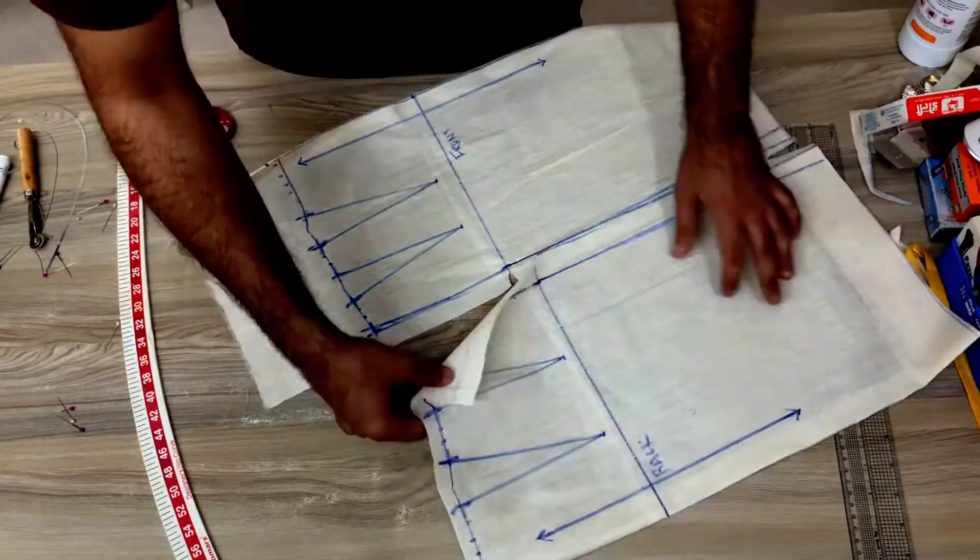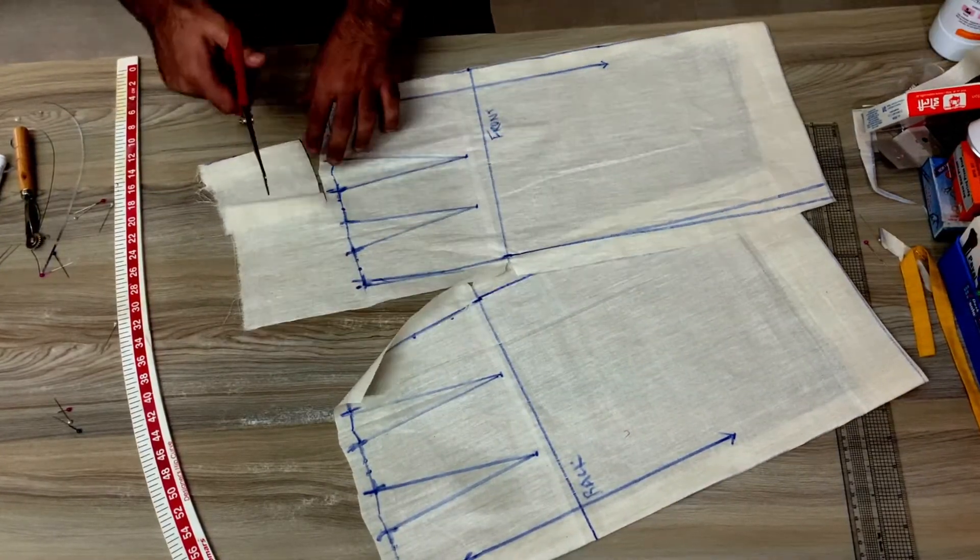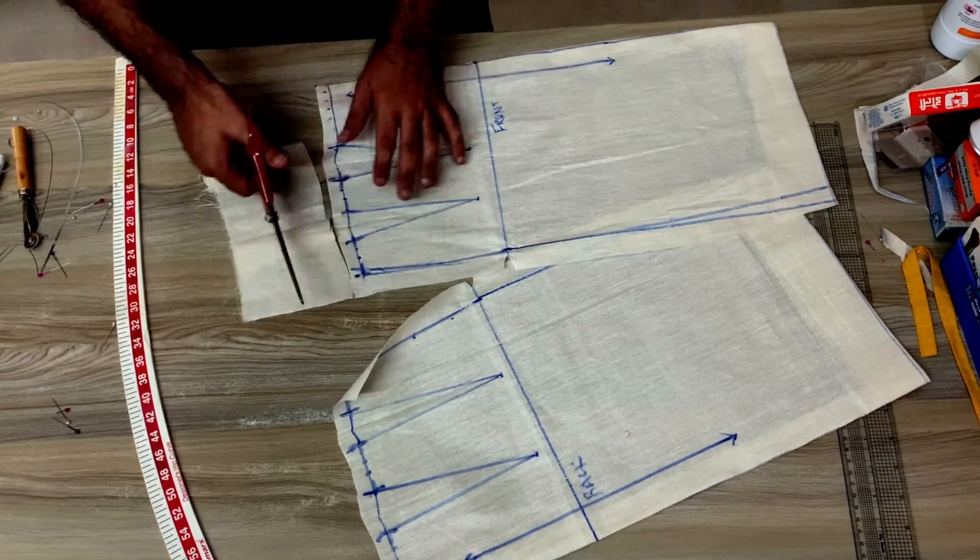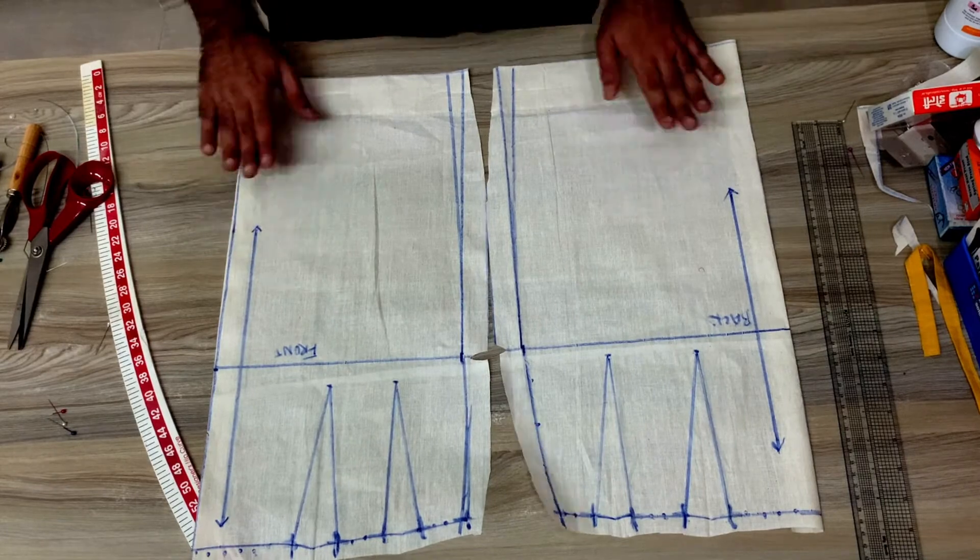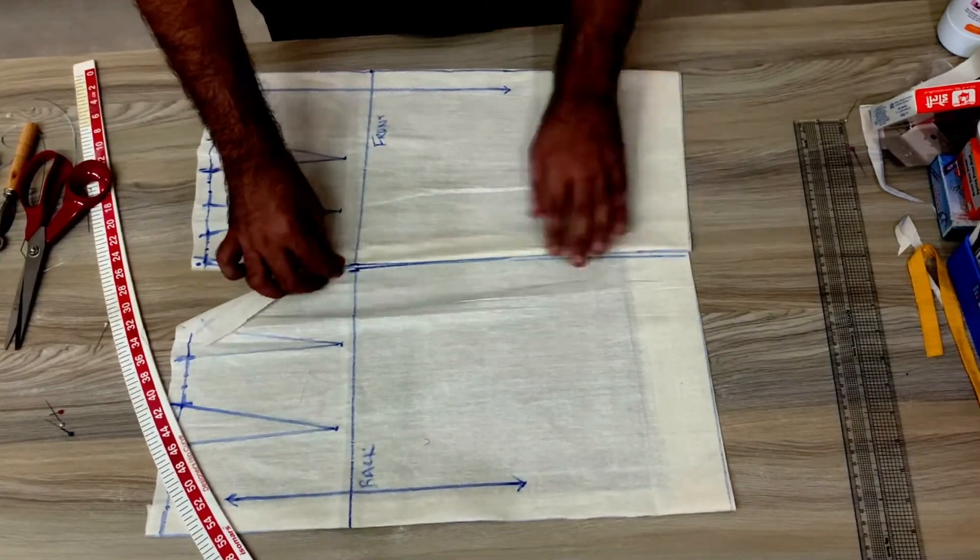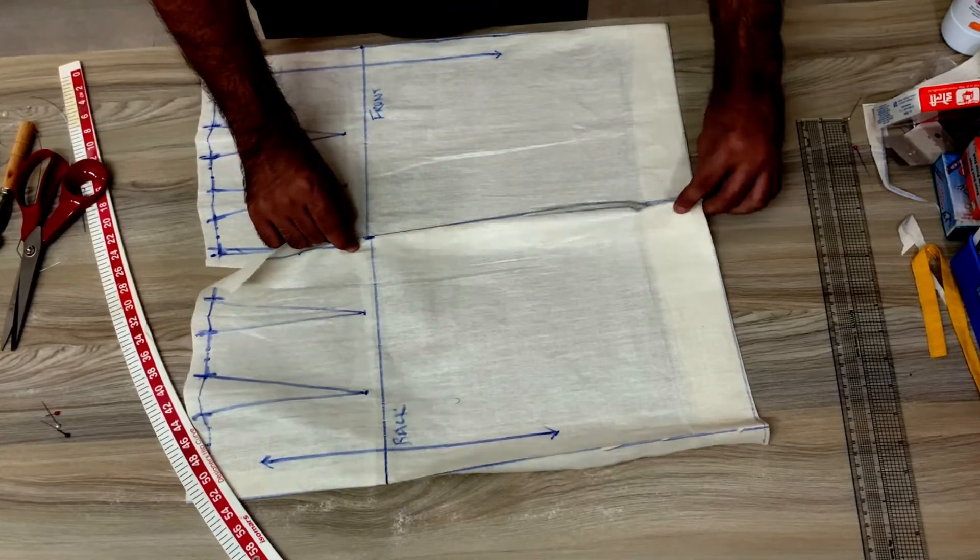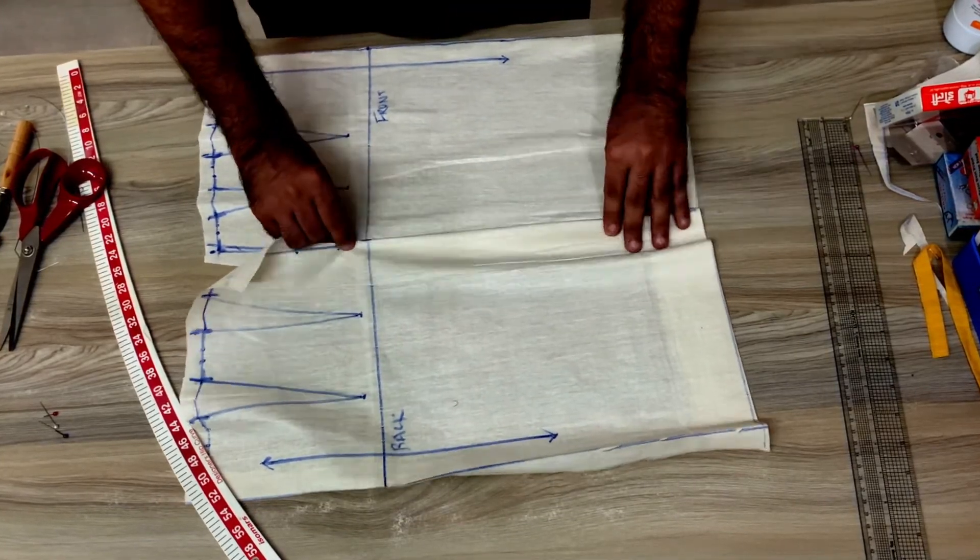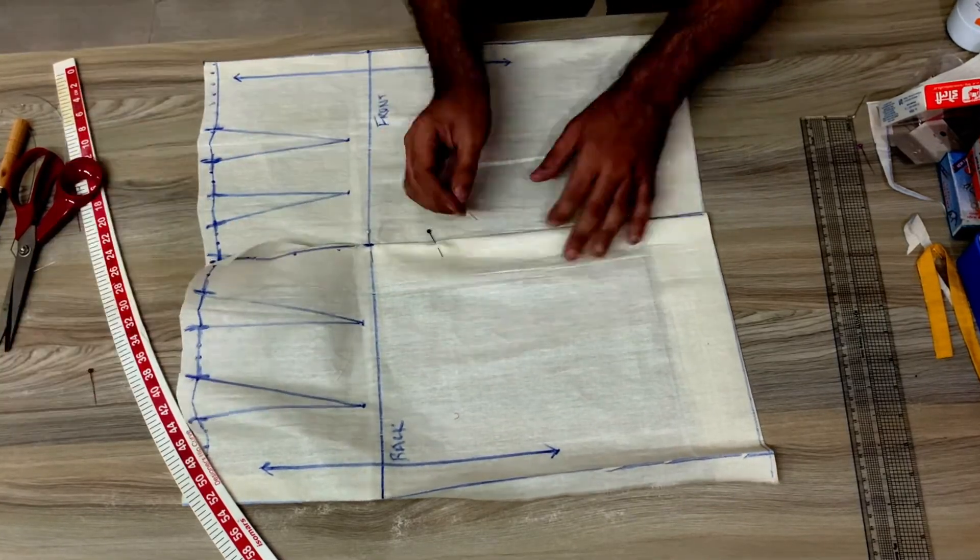Then cut over the seam allowances. Please take seam allowances. I'm not showing it in this video because I'm assuming that by now you know what are the seam allowances and how you're going to take it. Start pinning the back over front, start closing the darts, and your test fit is ready for the basic skirt.